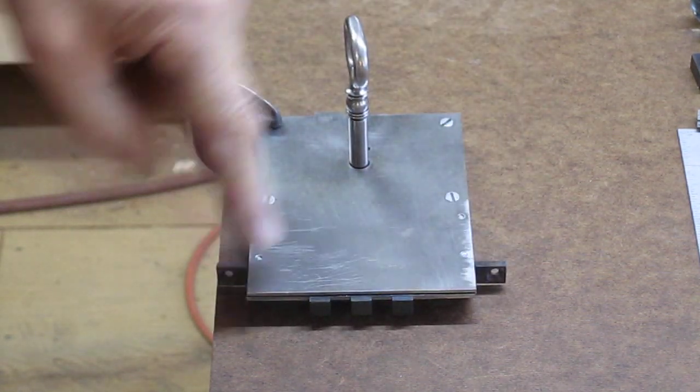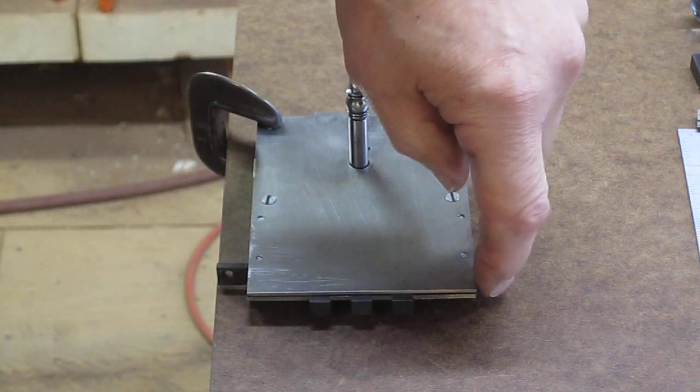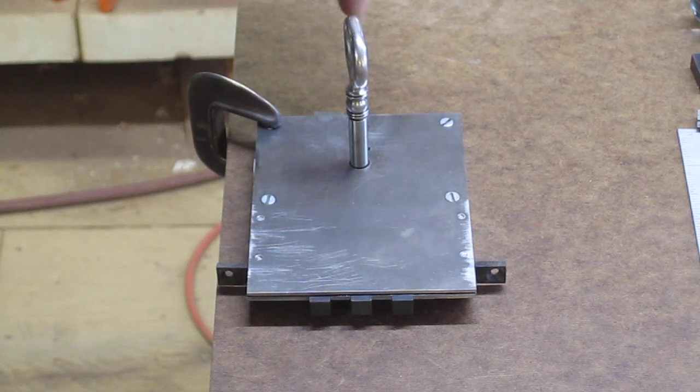In addition, I've added ears on the side which have holes in them for wood screws. Those are what actually will hold the lock in the desk lid.